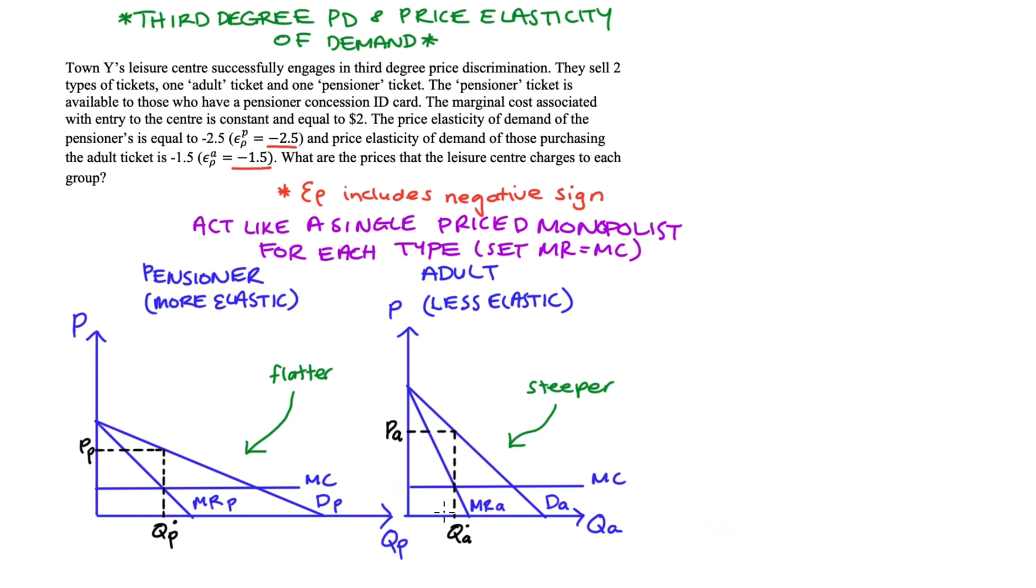Now just to be clear, to say that the elasticities of each of our types of consumers is negative 2.5 and negative 1.5, that's just to say that at that profit maximizing price, the elasticities are equal to negative 2.5 and negative 1.5 respectively. And what we should find when we calculate the prices, as the diagram suggests, is that the profit maximizing price associated with the adults, the more inelastic group, will be bigger. It'll be larger than the price associated with the pensioner group, the more elastic group.